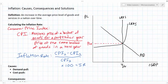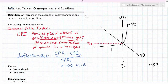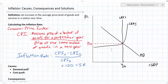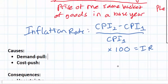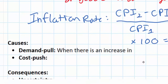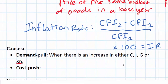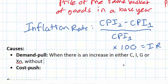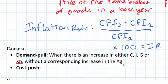When an economy is in equilibrium, there are only two things that can cause inflation to increase: either an increase in aggregate demand or a decrease in aggregate supply. Let's look at demand pull inflation first. Demand pull inflation occurs when there is an increase in either C, I, G, or XN — consumption, investment, government spending, or net exports — without a corresponding increase in aggregate supply.